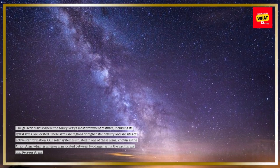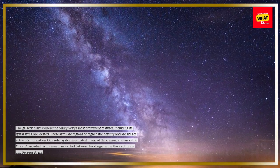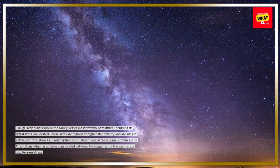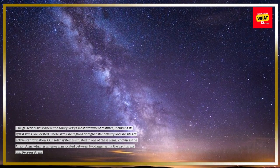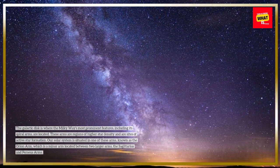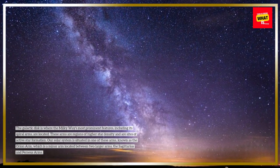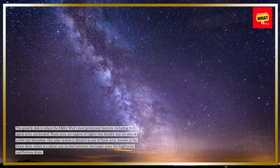Our solar system is situated in one of these arms, known as the Orion Arm, which is a minor arm located between two larger arms, the Sagittarius and Perseus arms.